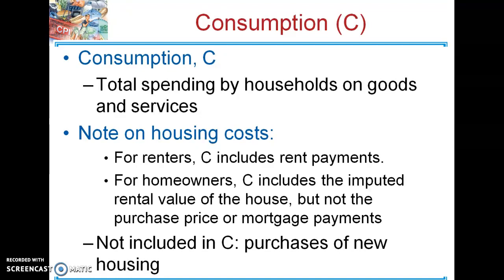One quick note on private consumption: for individuals that own their own homes, they take the rental equivalent of that home and count that towards the GDP. So this is one of those rare exemptions they make for home production. Usually home production — like you have an apple tree and it grows apples — doesn't count towards GDP. But when we look at homes that people own, the home every month is creating shelter.